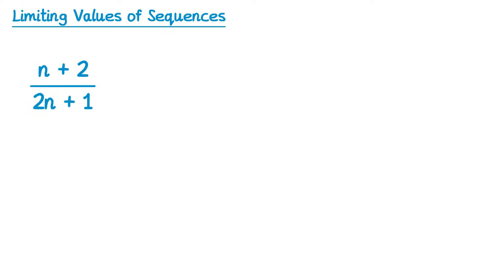Let's start generating some of the terms. So the first term we replace n for 1, so we have 1 plus 2 over 2 lots of 1 plus 1, which would give you 3 over 3, which is 1.